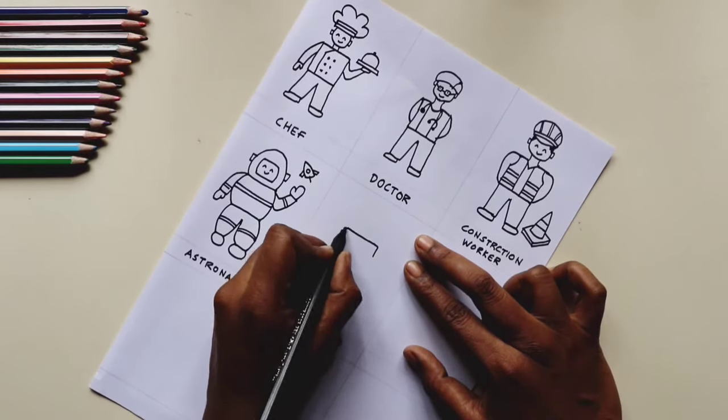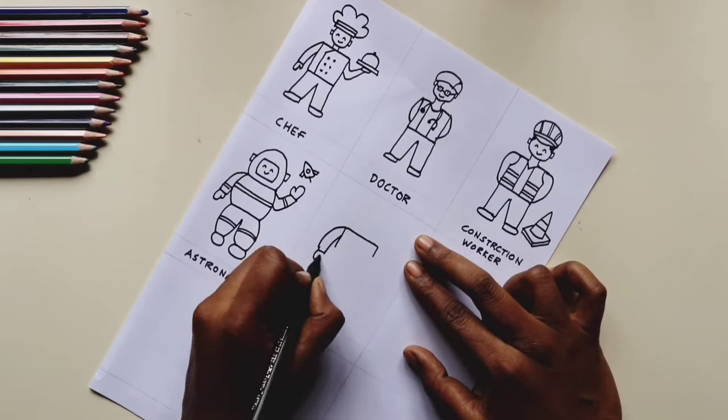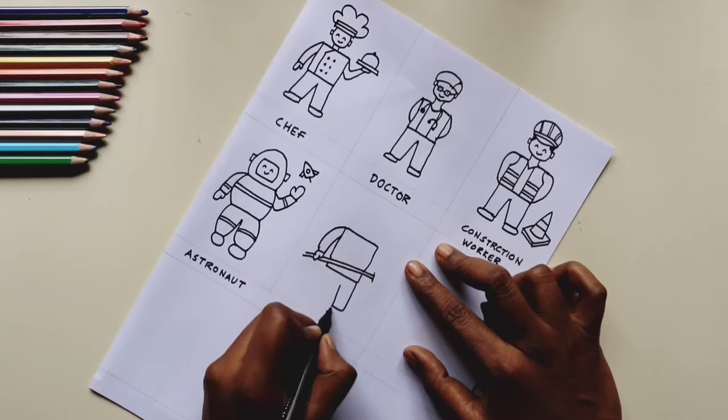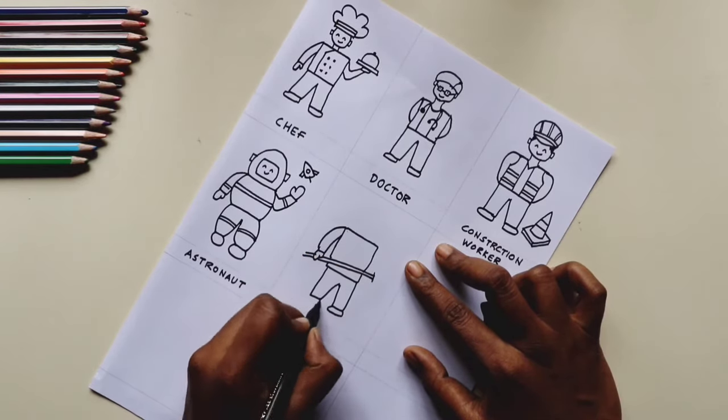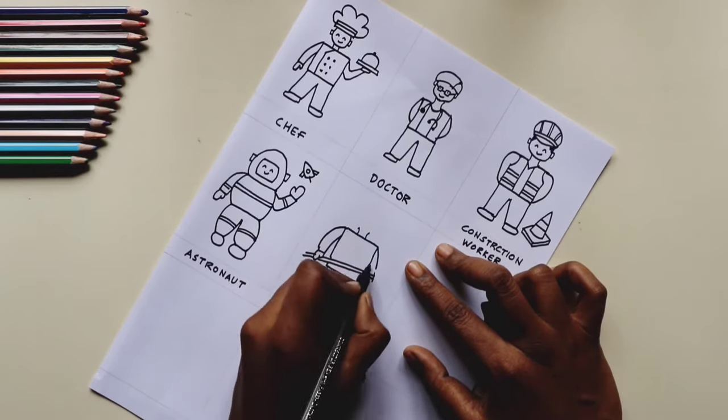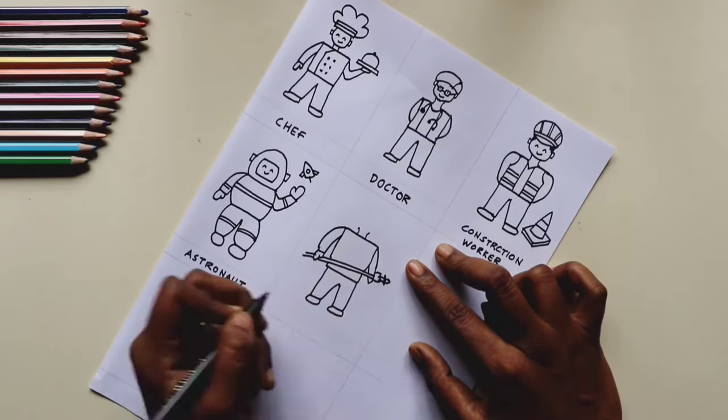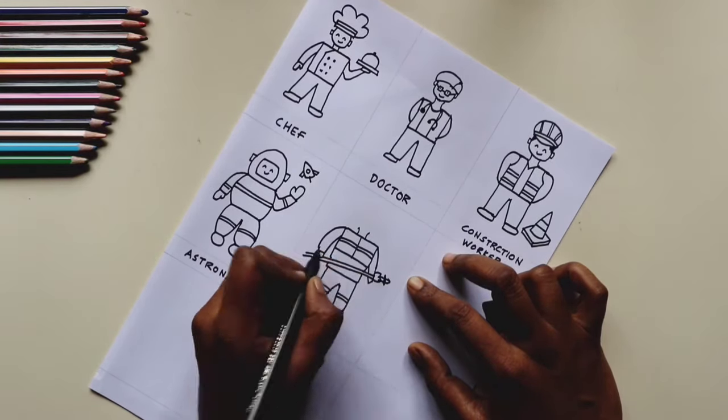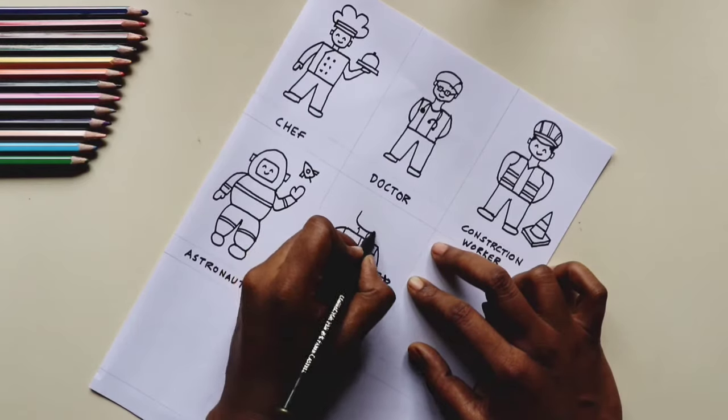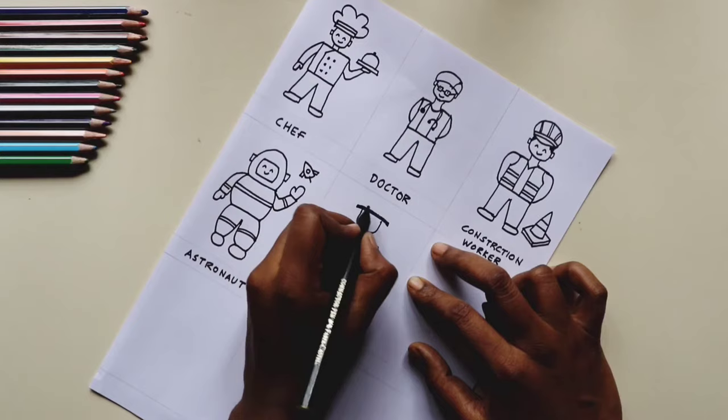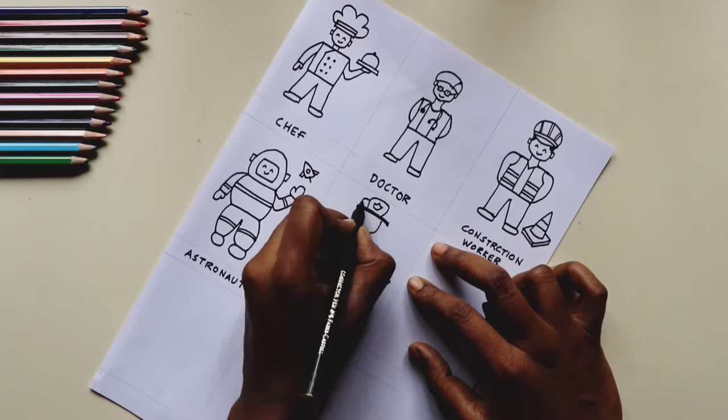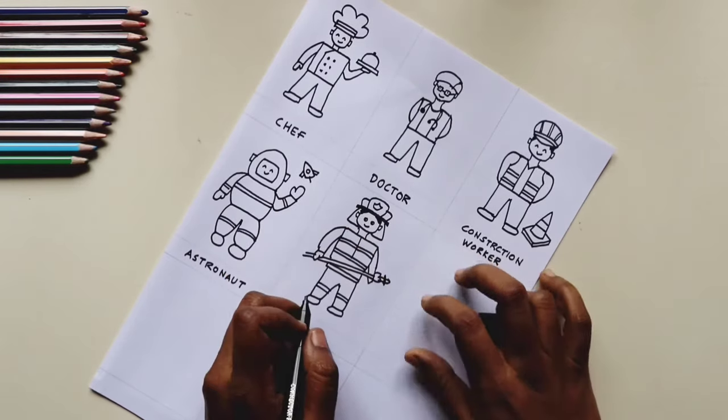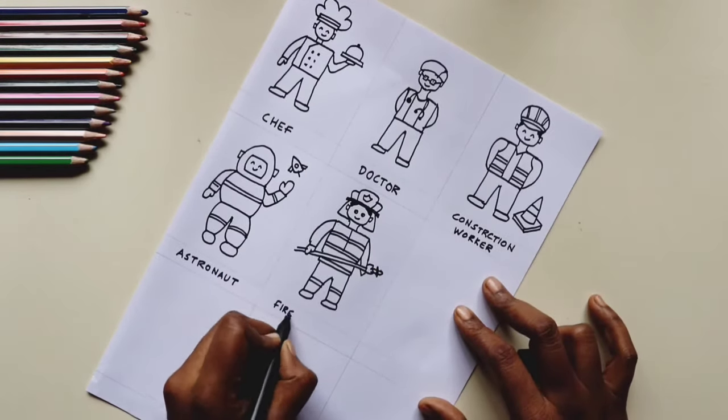The next one here is going to be the firefighter. Again, firefighter's bodysuit is going to have many stripes and let's give him a pipe in his hand. And the hat, it's going to have a symbol maybe that's the fire, and that's it.